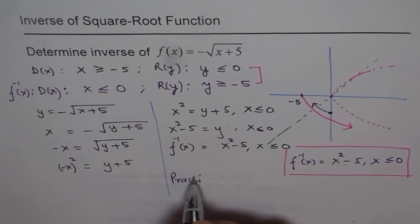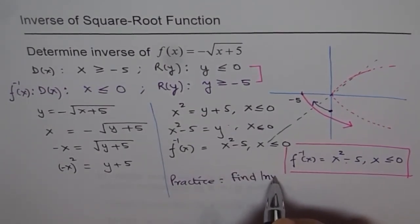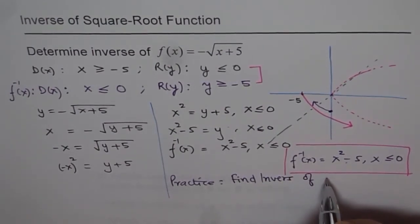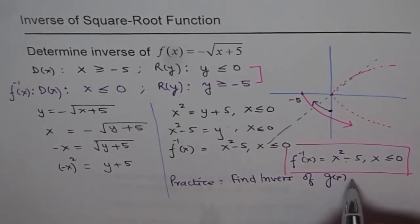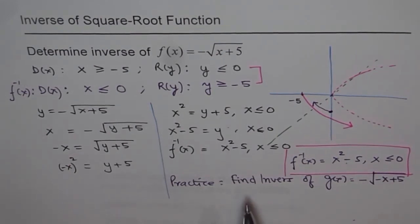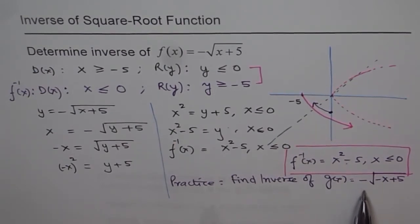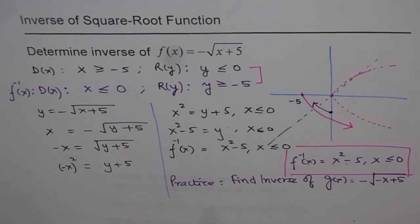As a practice problem, I'd like you to find the inverse of g(x) = -√(-x + 5). I have changed the function slightly — instead of x + 5 under the radical, it is now -x + 5. Try to do this on your own and check whether the domain and range match.